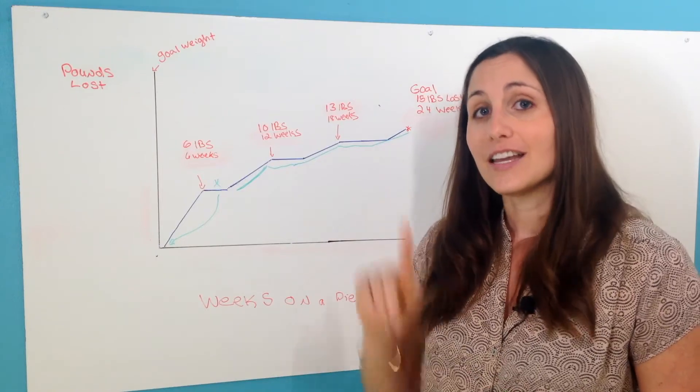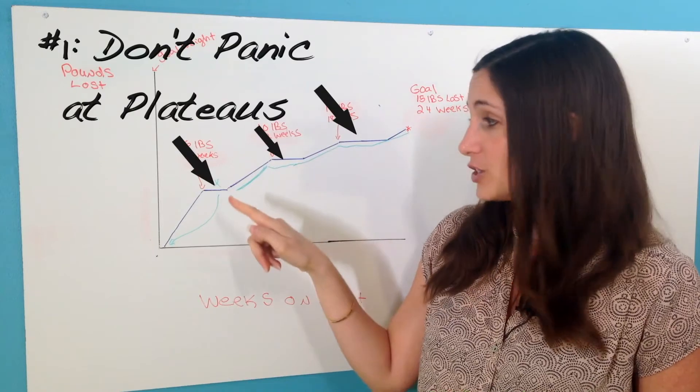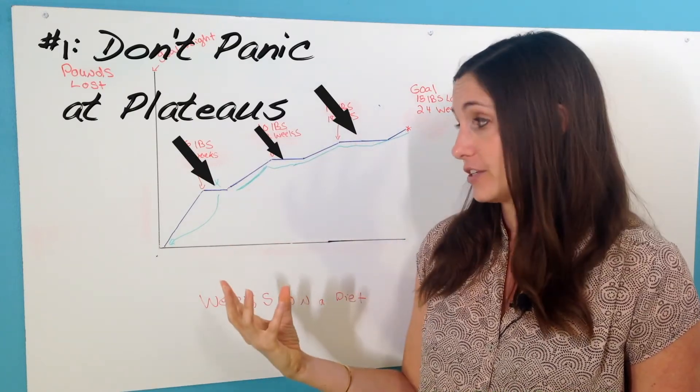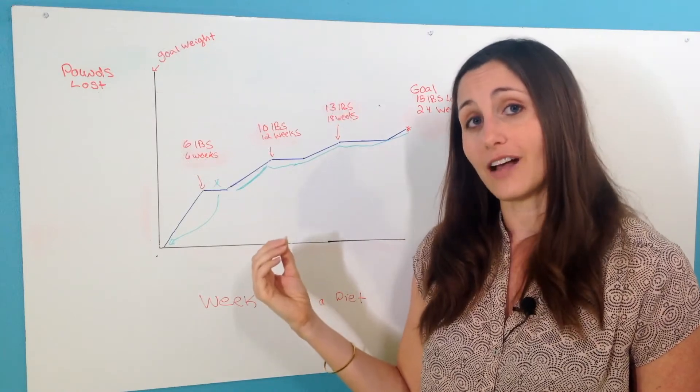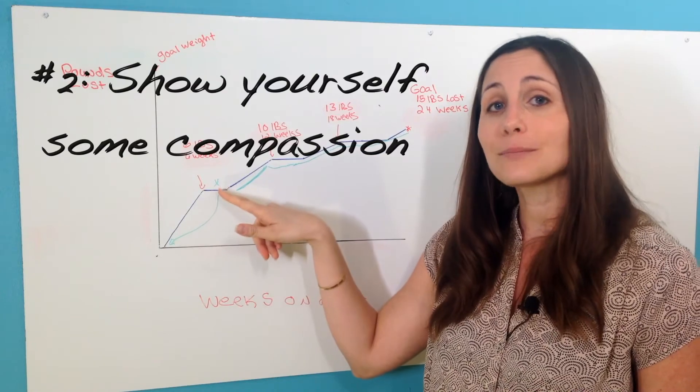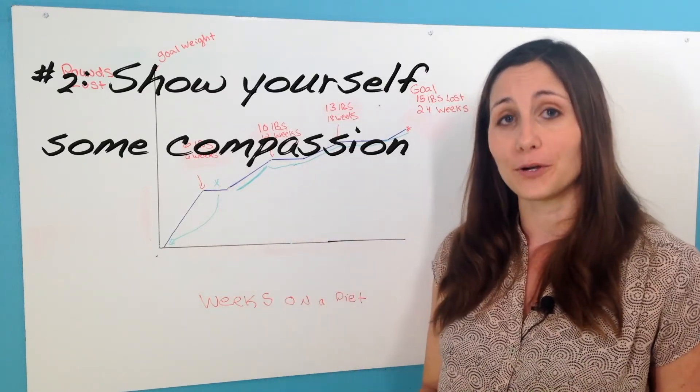And that is why I want you to think about two things from this lesson. Number one: the science here. Don't panic when you get to a plateau. That's your body responding to the changes and adapting, so just be patient with yourself. And number two: show yourself some compassion. It's really easy to be proud of yourself when you're dropping tons of weight, one pound per week. It's easy to be excited.